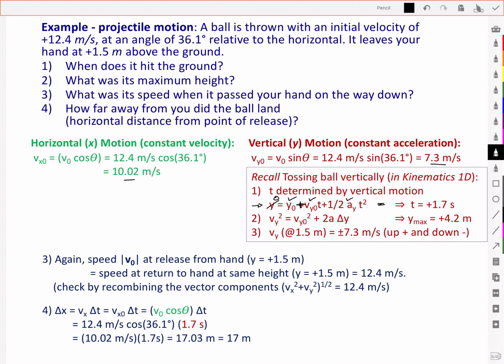Second, we found what was its maximum height from this equation here where we again know the acceleration. We know the initial upward velocity. And we know that the velocity at the maximum height is equal to 0. And so we were able to find the maximum height as 4.2 meters. And that still applies here because we have the same upward component of the velocity.